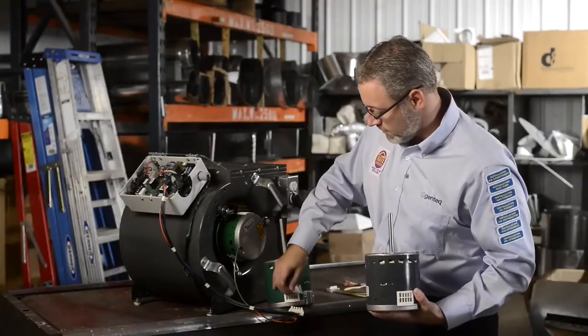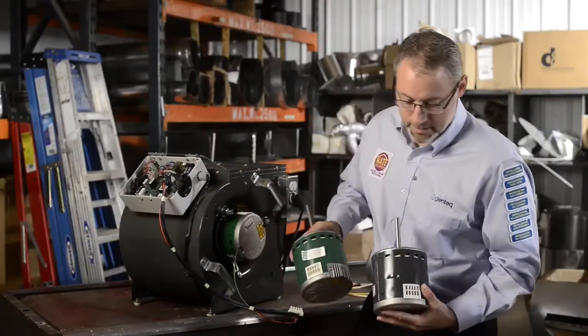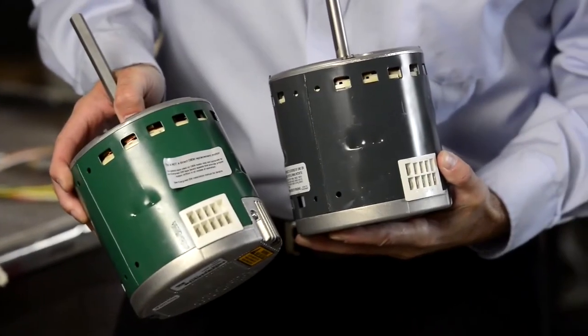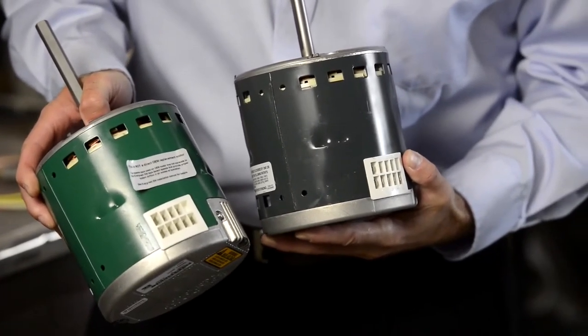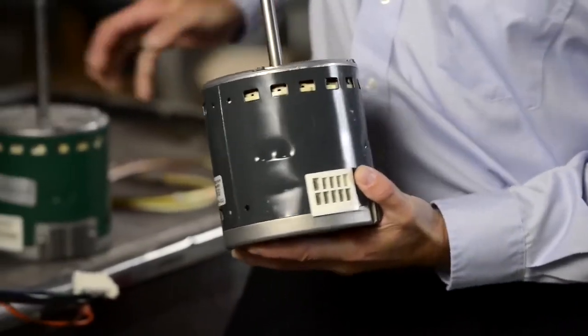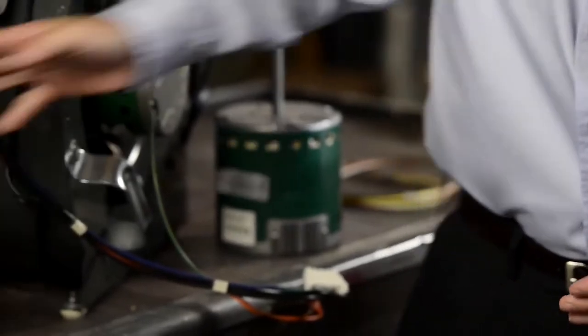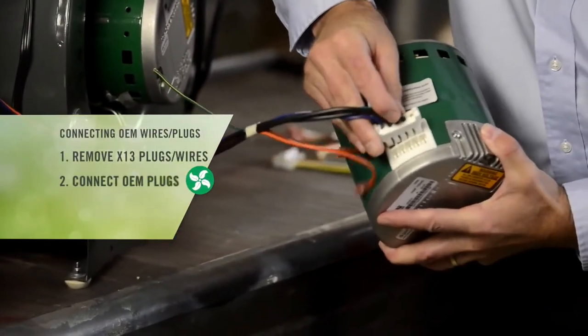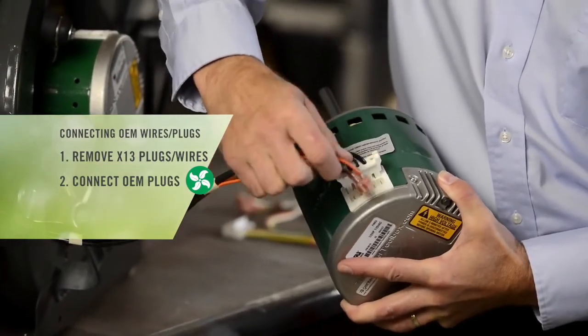What you might find very interesting about the X13 and the Evergreen EM is that they have the exact same plug connections. Not just the same terminals, but the exact same plug connections, which means we will be able to take the plugs or individual wires out of the X13 motor and connect them directly into the Evergreen motor.